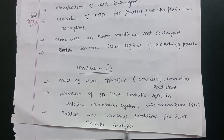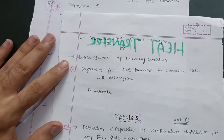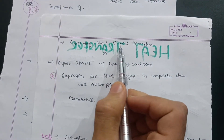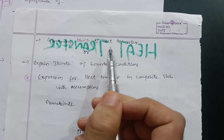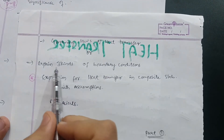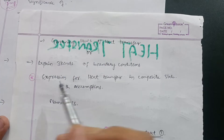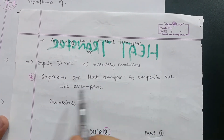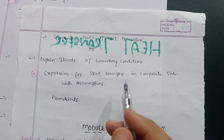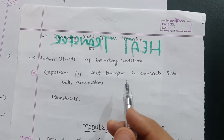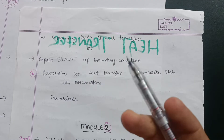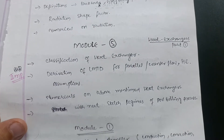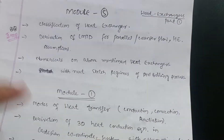Also cover initial and boundary conditions for heat transfer analysis, and the governing laws of heat transfer for conduction, convection, and radiation. In Part 2, they may ask you to explain three kinds of boundary conditions and the expression for heat transfer in a composite slab with assumptions. I recommend going for Part 1 — modes of heat transfer and the derivation of the 3D heat conduction equation — as it is more convenient.